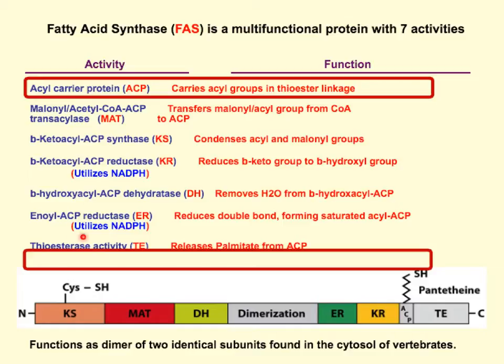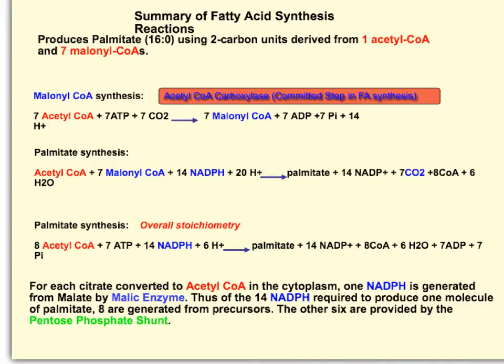When all that's done, thioesterase (TE) will release palmitate from the carrier protein. Looking at the stoichiometry of fatty acid synthesis, it takes seven acetyl-CoAs to produce seven malonyl-CoAs, using up seven ATPs and combining with seven CO2s. These seven malonyl-CoAs are then combined with one more acetyl-CoA, using up 14 NADPHs, to form palmitate. The overall stoichiometry is eight acetyl-CoAs, 14 NADPHs, and seven ATPs to form palmitate.